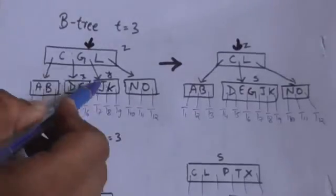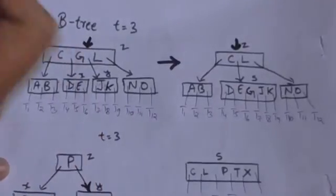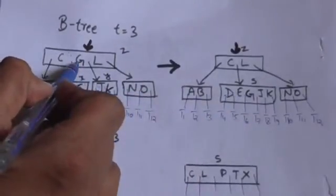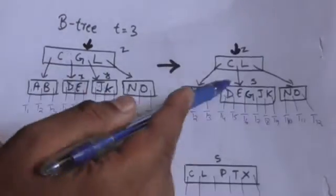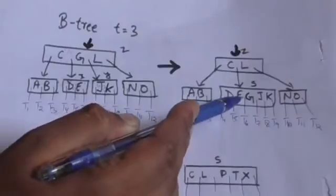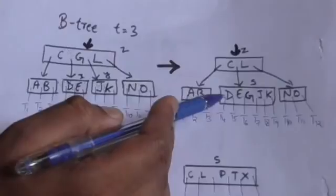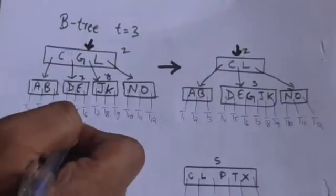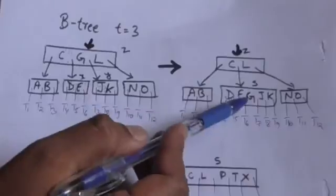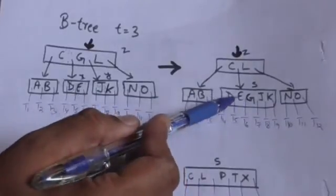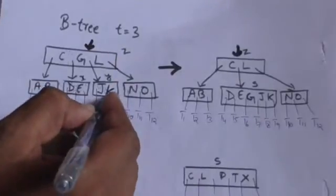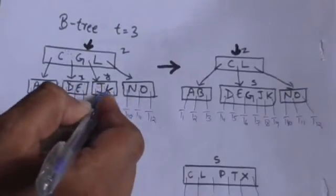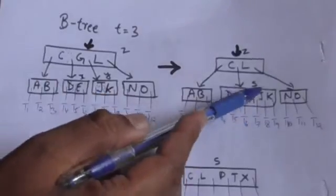Node y is at the right of key G of parent node z. We will merge nodes x and y into a single node s. Key G will move from parent node z to child node s, and will be at the mid position in node s. Keys of node x — that is D and E — and children of node x will be at the left of key G in node s. Keys of node y — that is J and K — and all children of node y will be at the right of key G in node s.